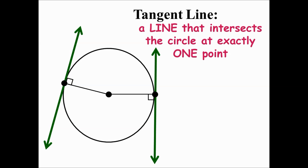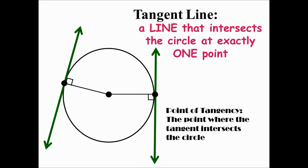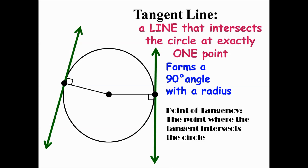The tangent line is a line that intersects a circle at exactly one point. The point of tangency is the point where the tangent line intersects a circle. A radius can be drawn from the point of tangency to the center of the circle, and this radius forms a 90-degree angle with the tangent line.